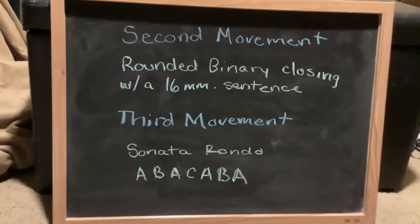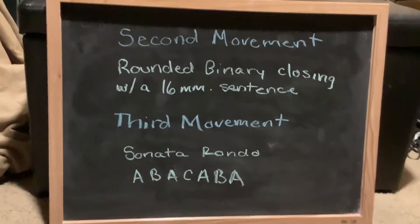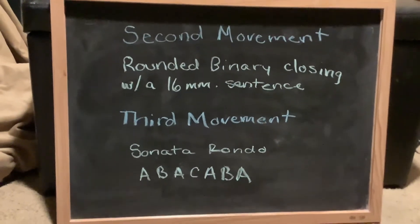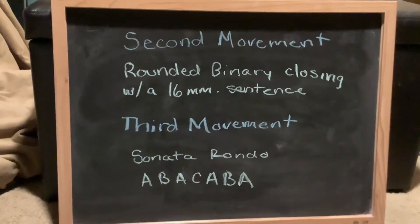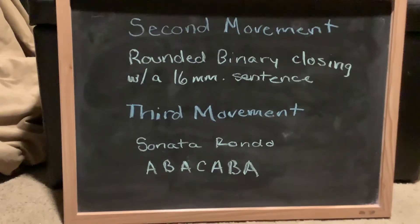Thanks for coming. Now to finish off, we're going to touch on the second and third movements. The second movement is in the form of a rounded binary closing with a 16 measure sentence. And the third movement is in the form of a sonata rondo following an A-B-A-C-A-B-A pattern. Foxy, thank you very much for paying attention for at least the first five minutes. That's a new record from our last class. You're doing a great job and I'm very proud of you.